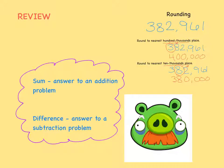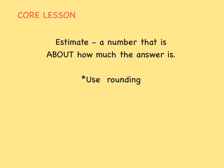These math terms should also look familiar. Sum means the answer to an addition problem, while difference means the answer to a subtraction problem. Go ahead and write these two definitions down so you remember them. An estimate is a number that is about how much the answer is. Key word here is about. We use rounding to help us figure out an estimate for our answer.